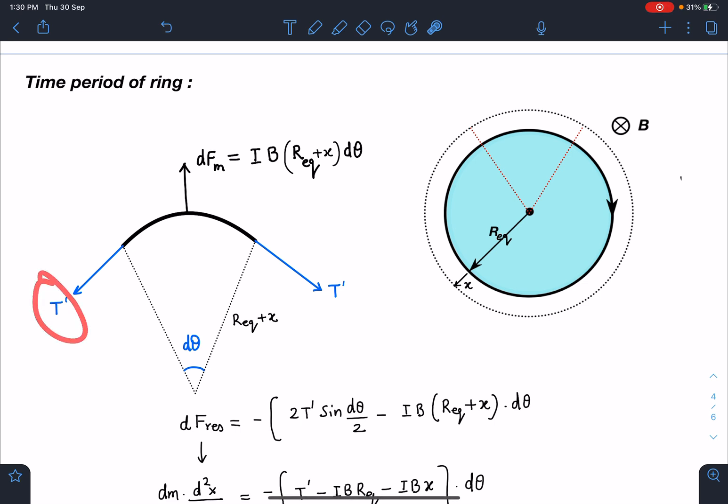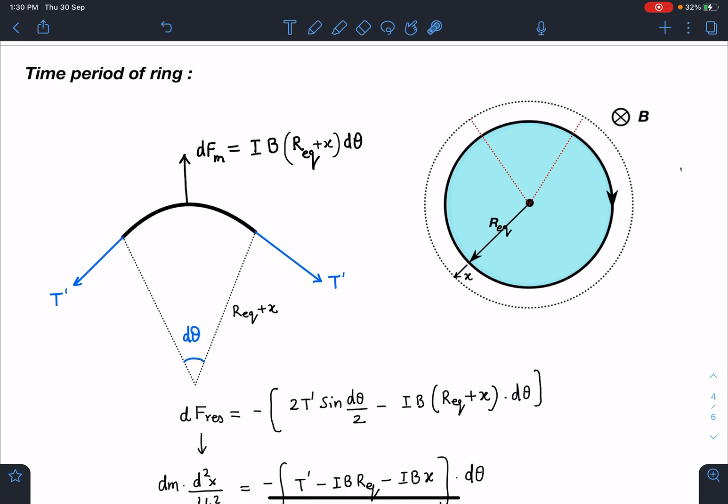And now tension will change slightly because the length has changed. So same logic I can apply. Now the net force towards the mean position I can write will be minus sign due to restoring nature: 2T' sin(dθ/2) - IB R dθ. Now if you see carefully this part, dθ I am taking outside because we already know this term will become T' dθ.